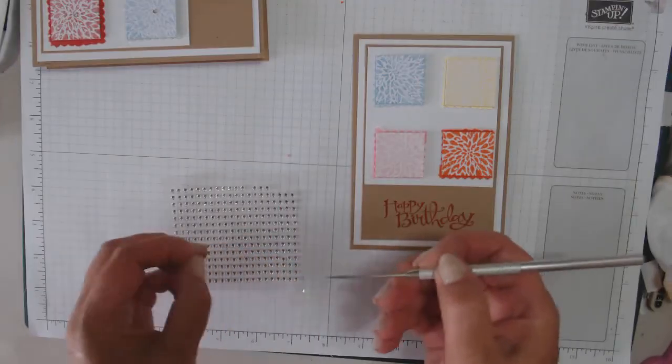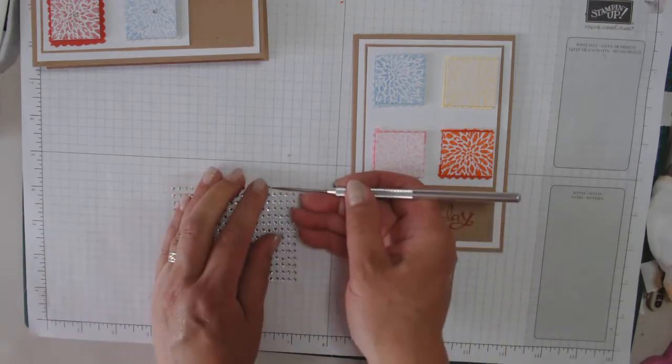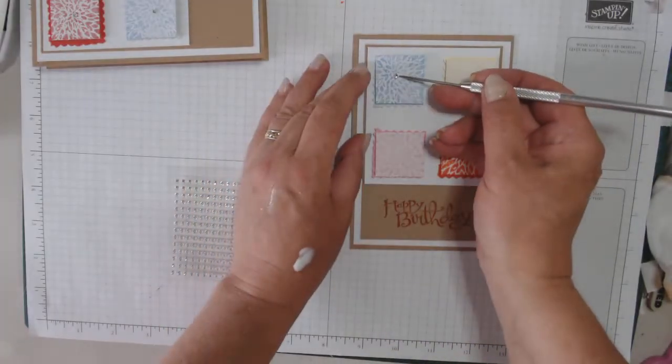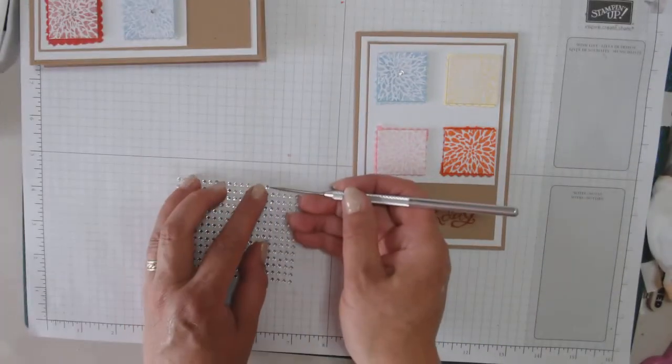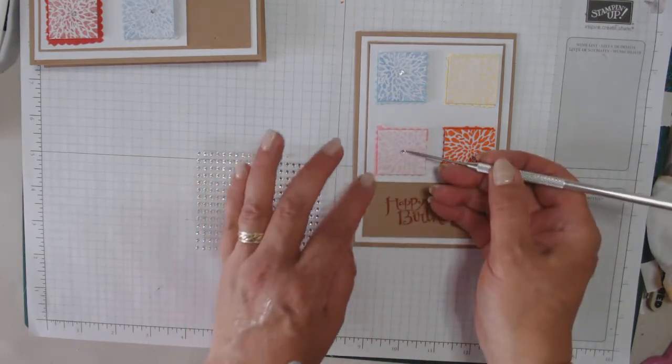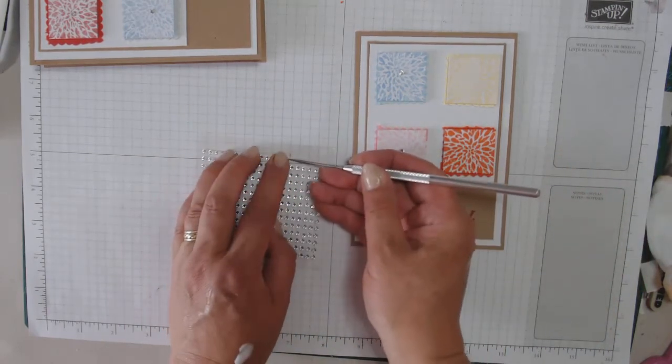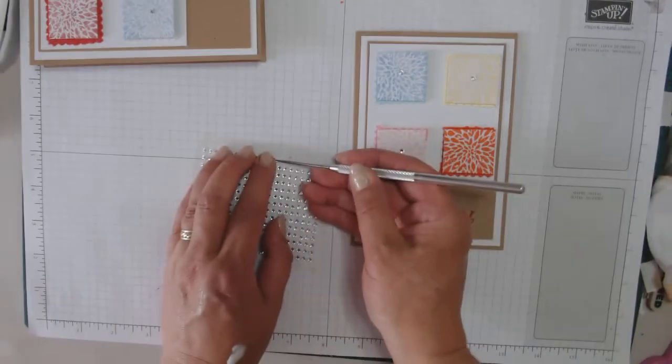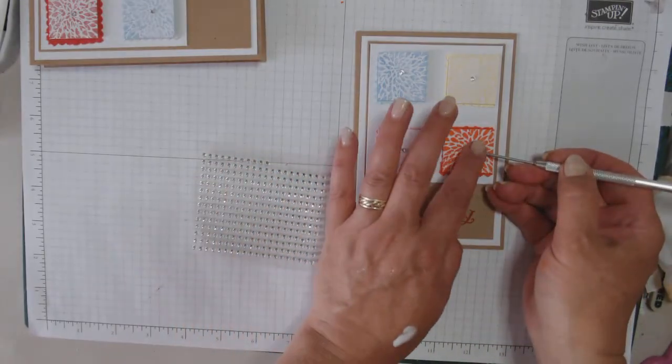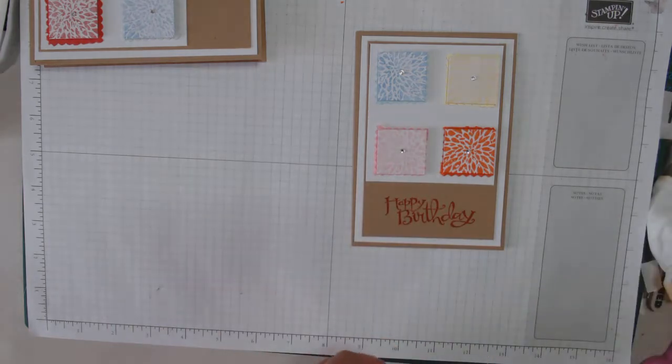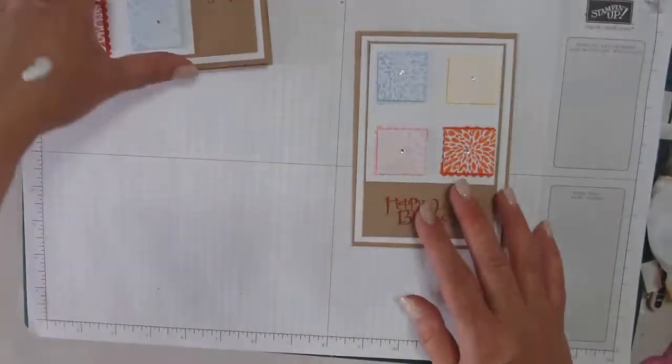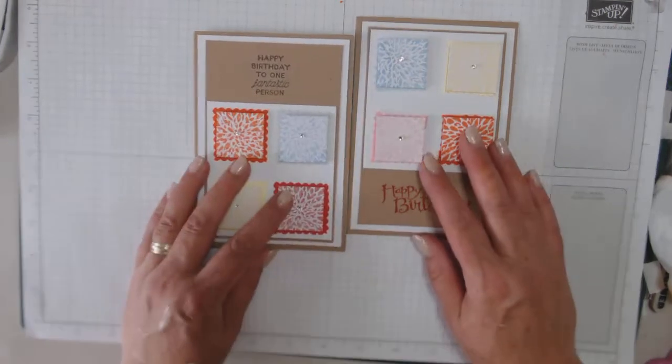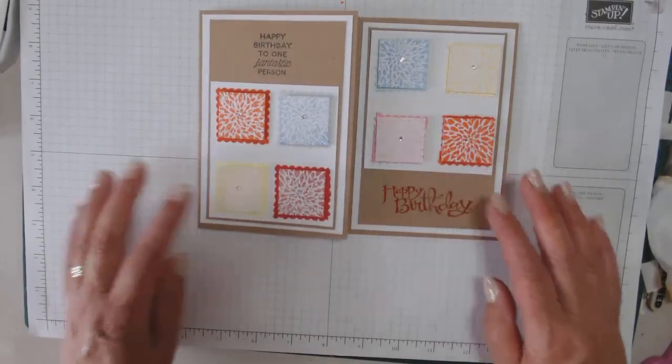And just get some, just a few little diamantes, a bit of bling. There you go. What do you think? Same card, two different ways.